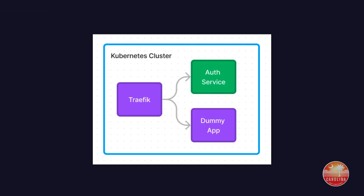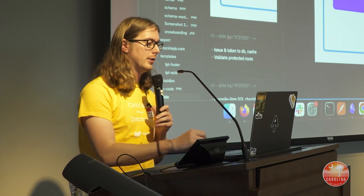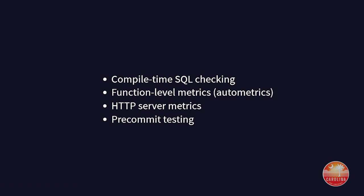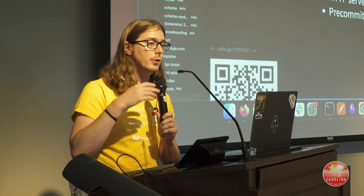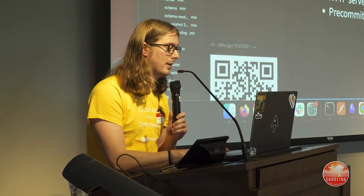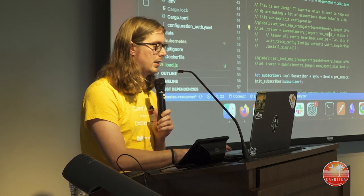Let's put it into practice. For today's demonstration I built an authentication service. A lot of reverse proxies have forward auth built in — you pass a specific header to another service and get back a 200 if authorized, or a 4xx error if unauthorized. We want to issue tokens to a database, cache them, and validate protected routes. I want to showcase compile-time SQL checking and function-level metrics, because you need to see how programs behave in the real world — and that requires observability. We're also covering HTTP server metrics. Let me start my K6 load tester in the background.